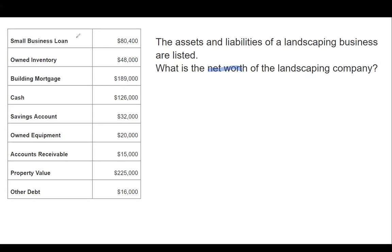A loan is a liability. Owned inventory is an asset — be careful with that, because it's easy to misread it as 'owed' inventory. A building mortgage is a liability. Cash is an asset. A savings account is an asset. Equipment they own is an asset. Accounts receivable is an asset — it's money they're supposed to get, like when they did a service and someone still has to pay that final bill. Property value is an asset, and other debt is a liability.